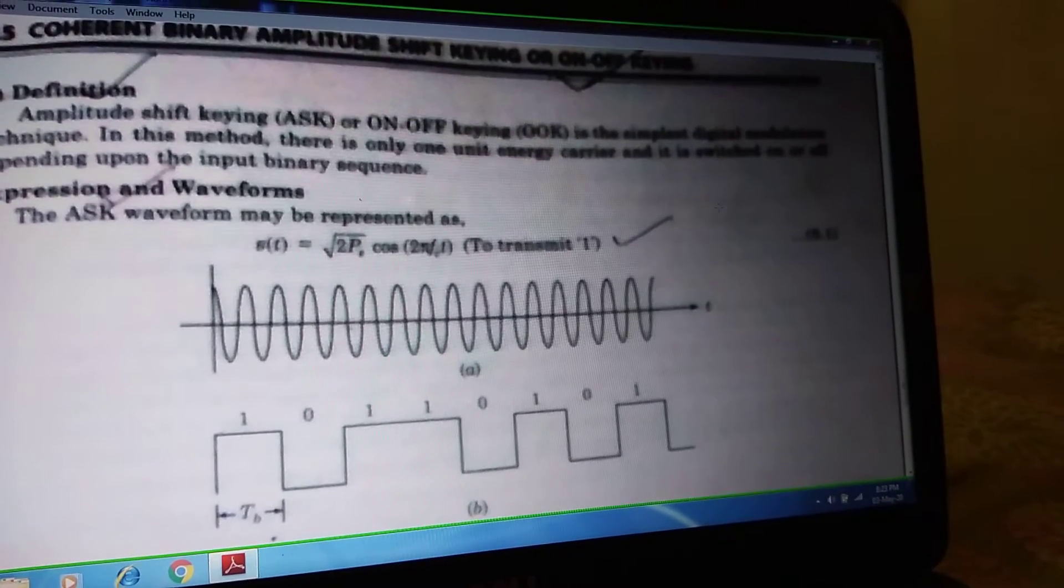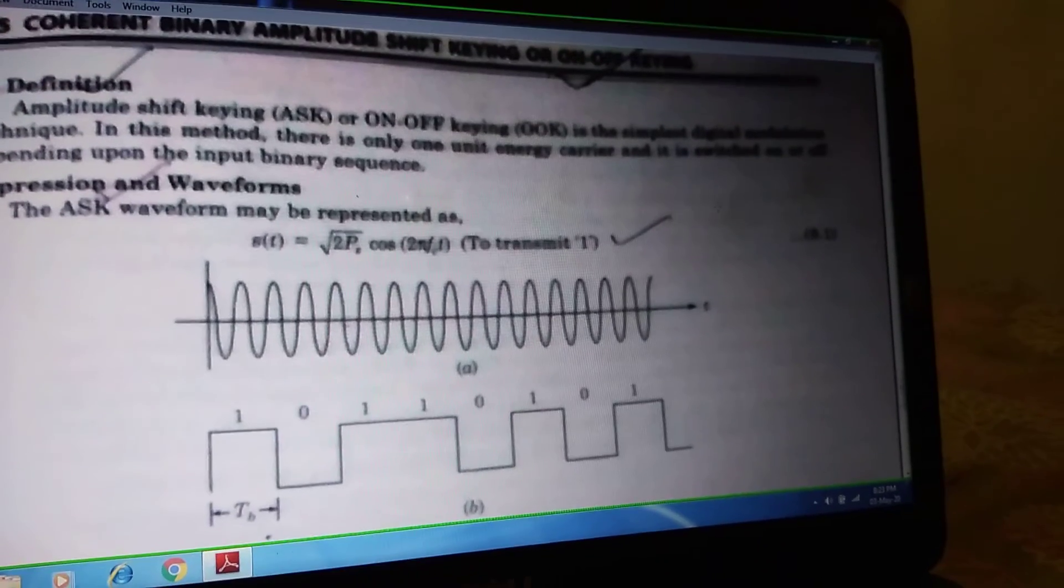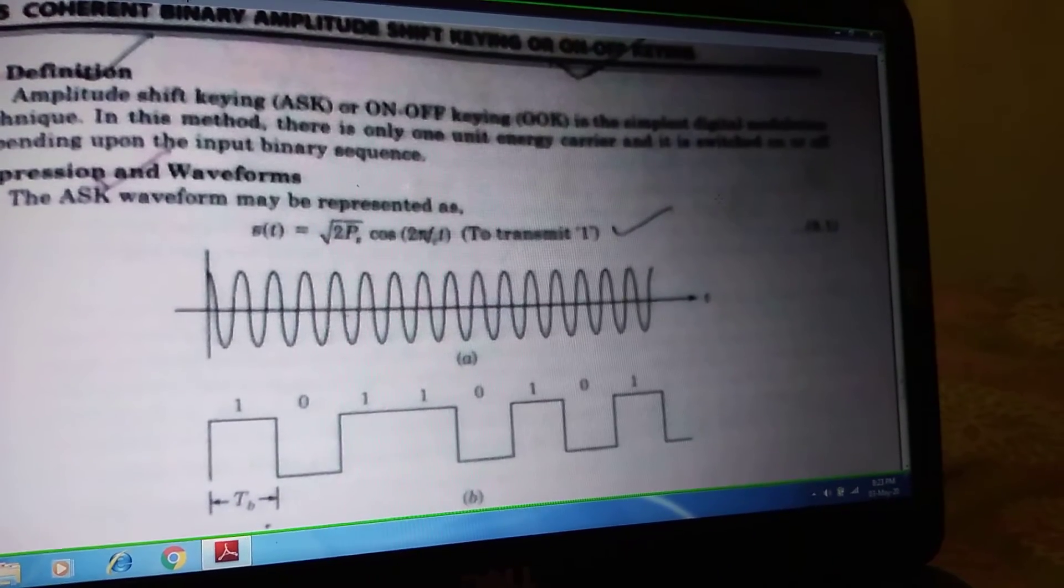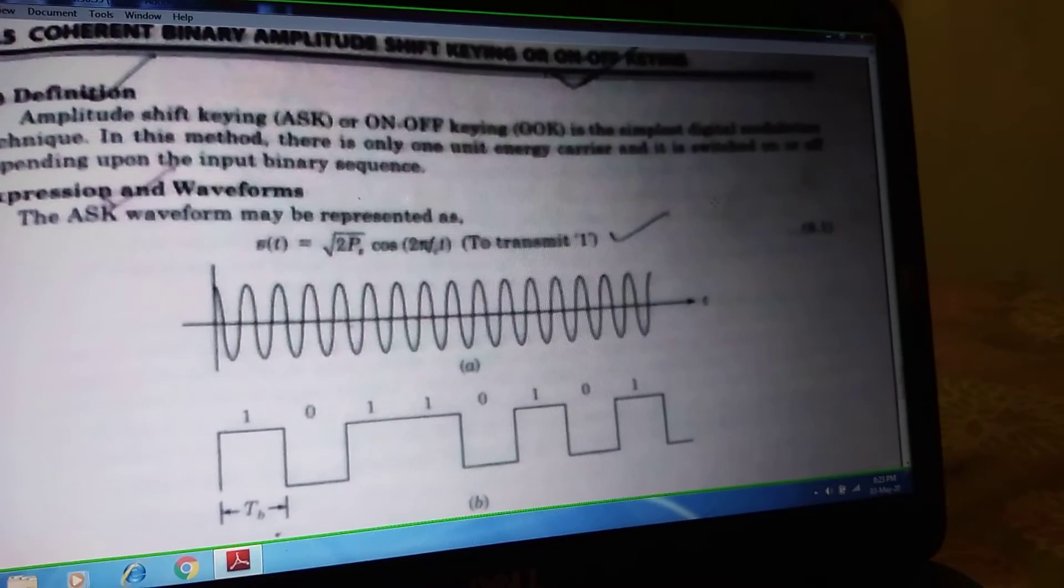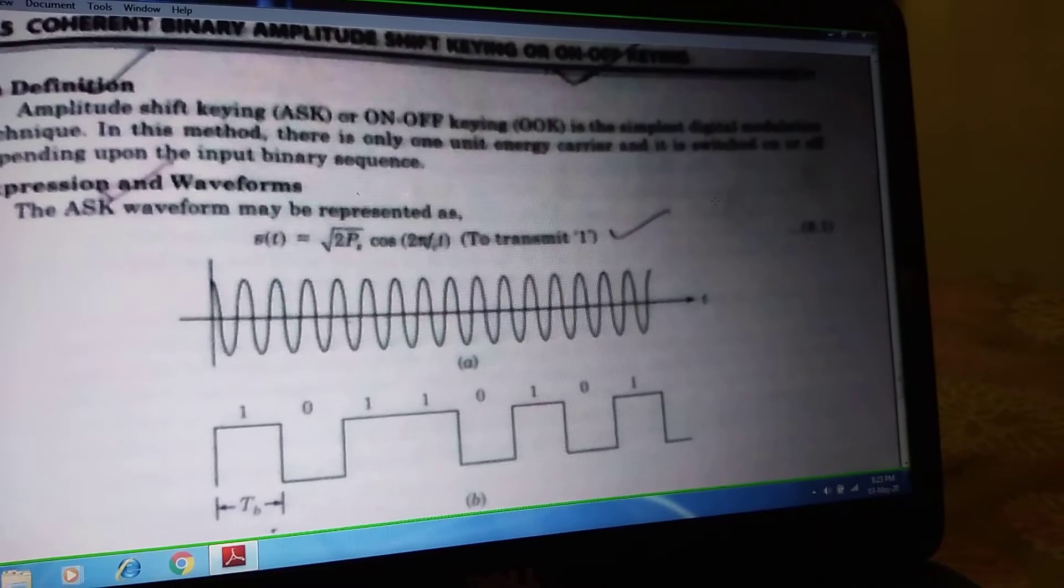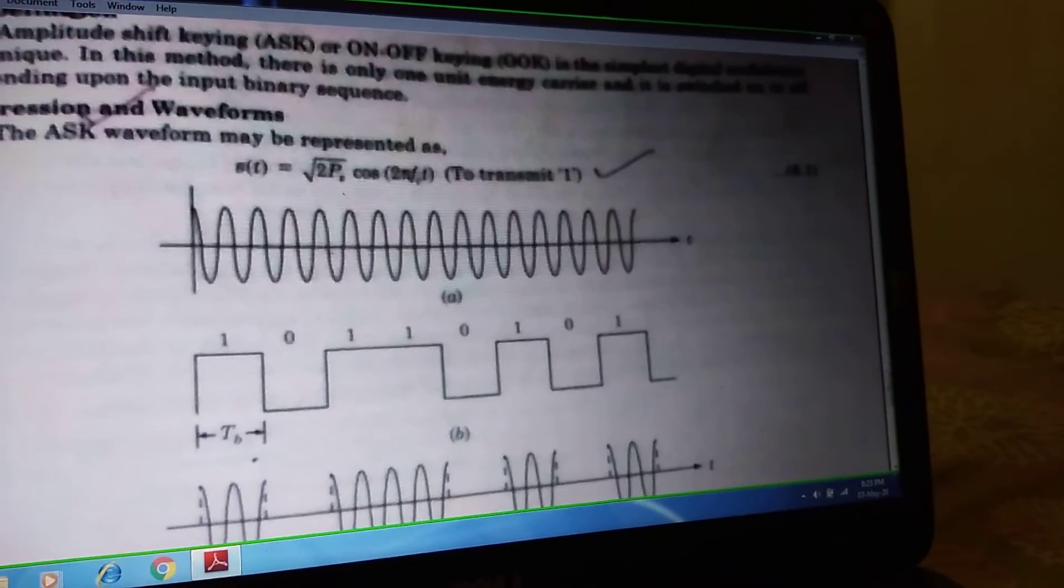We know amplitude shift keying or on-off keying is the simplest digital modulation technique. In this method, there is only one unit energy carrier and it is switched on or off depending upon the input binary sequence. That is the simple definition provided in our book.